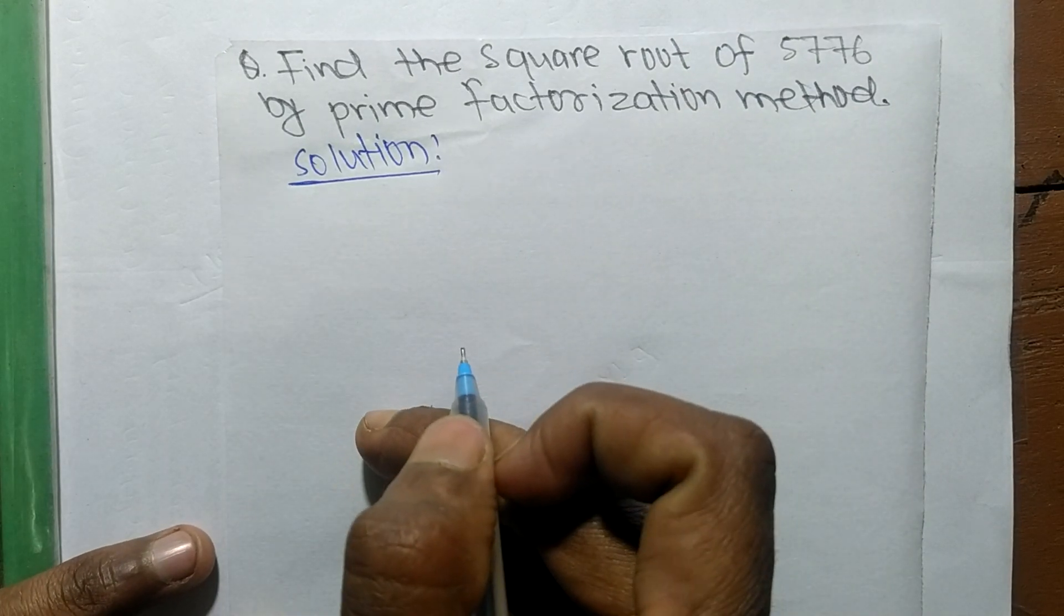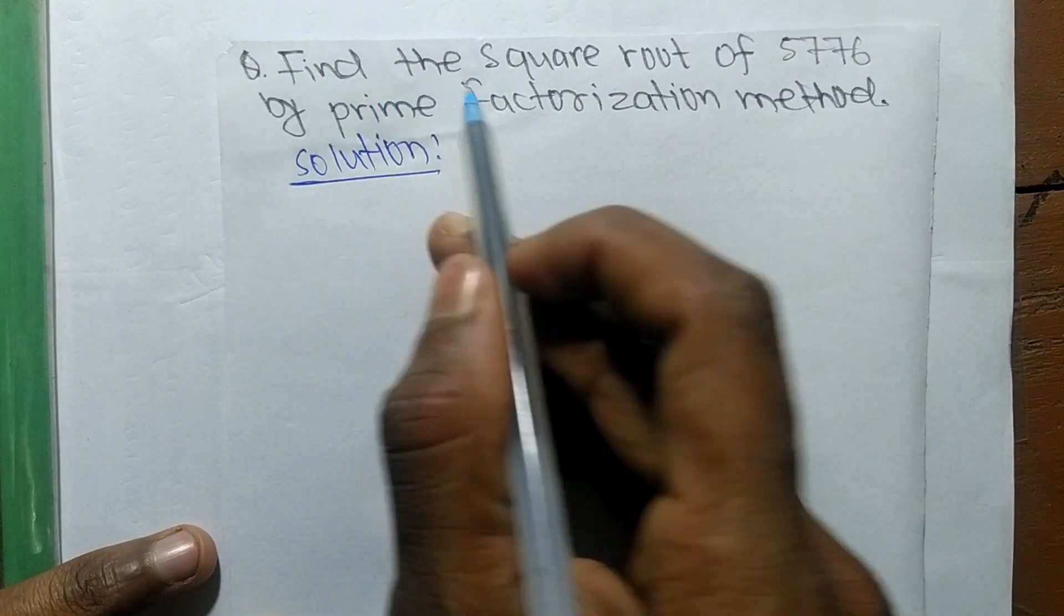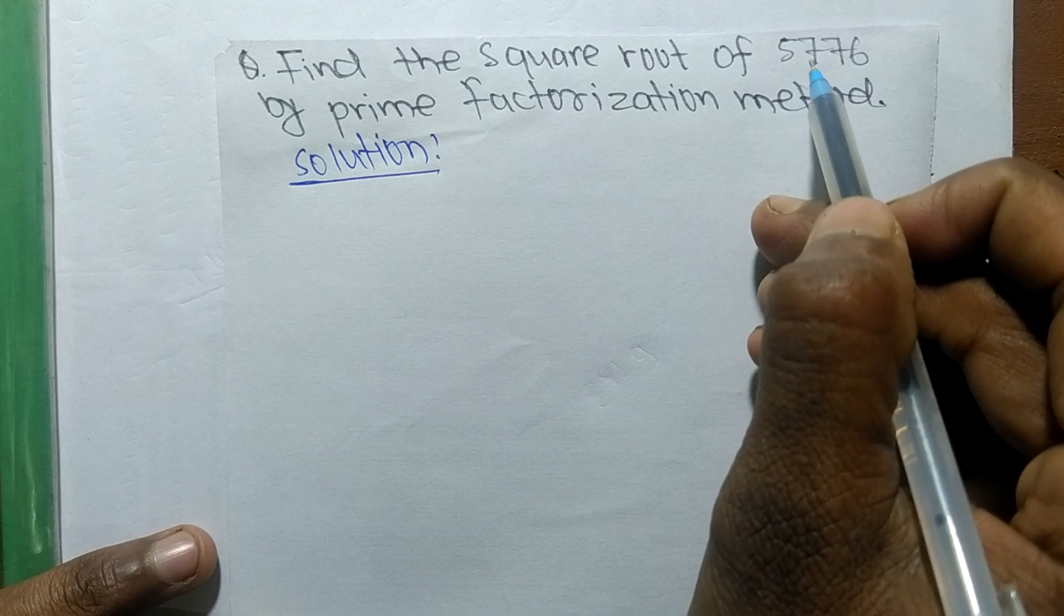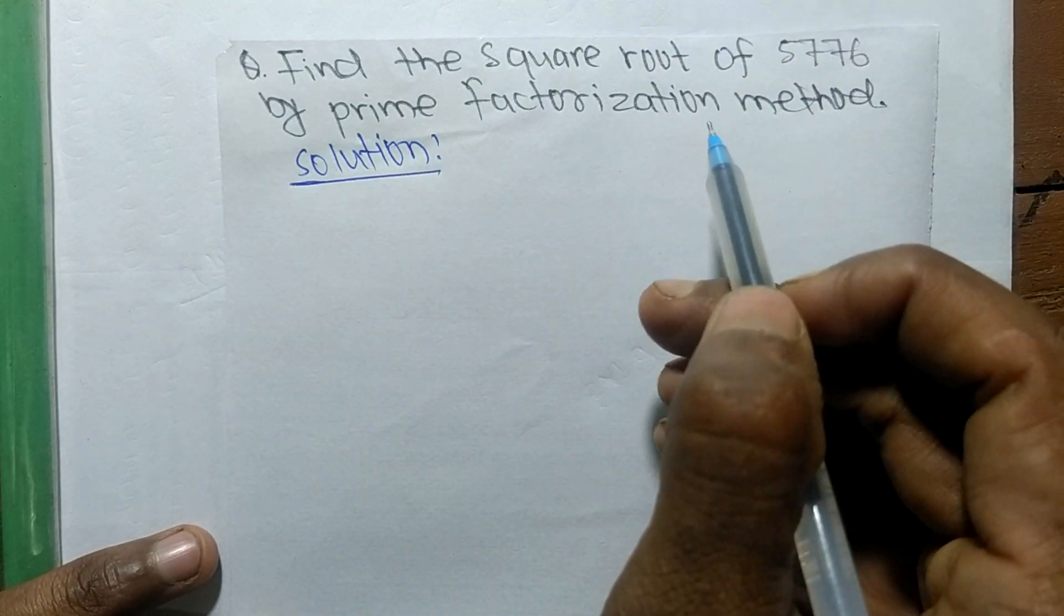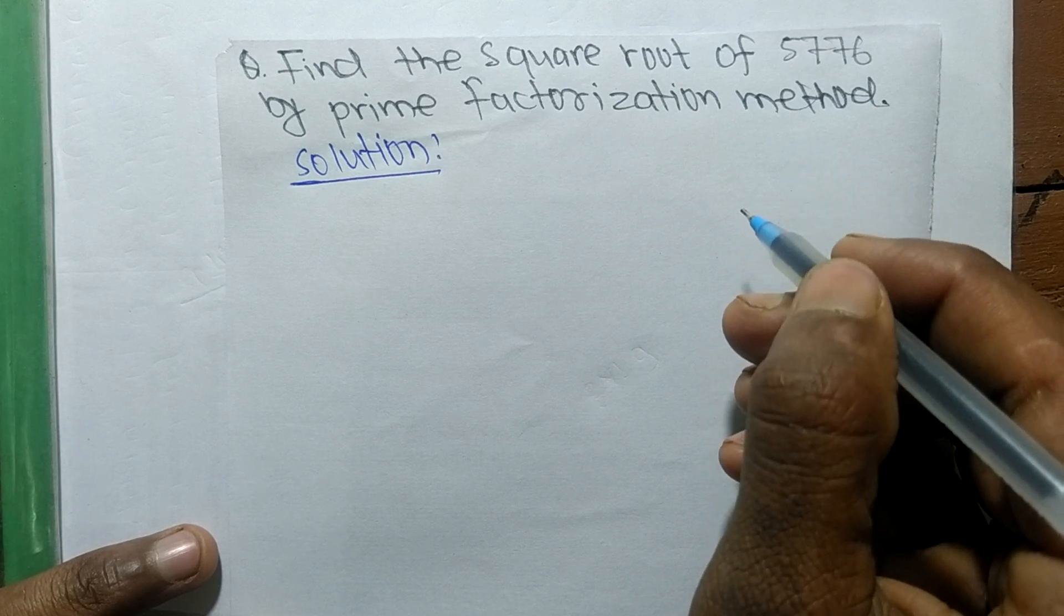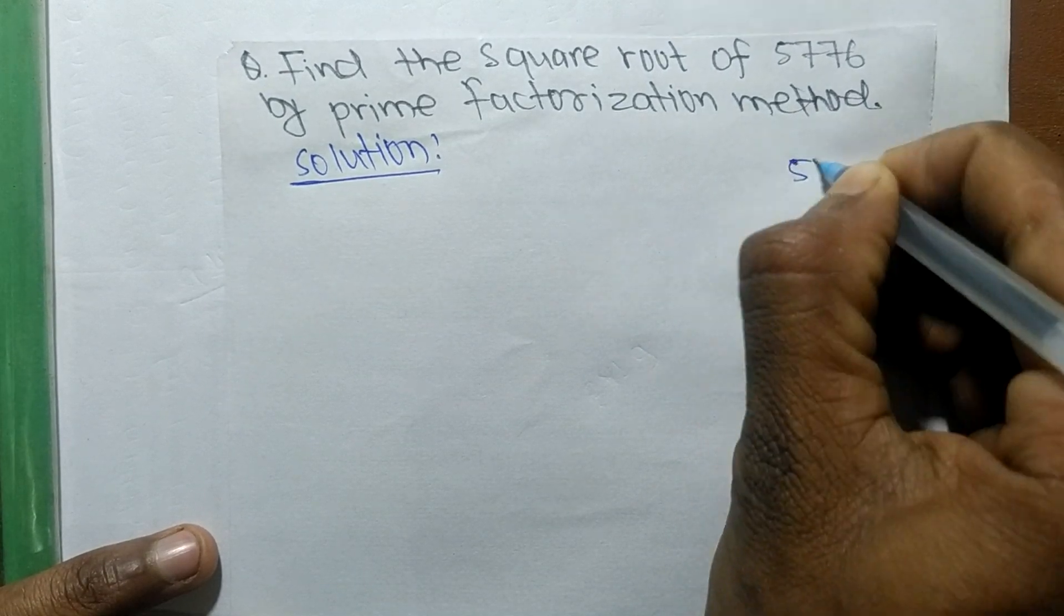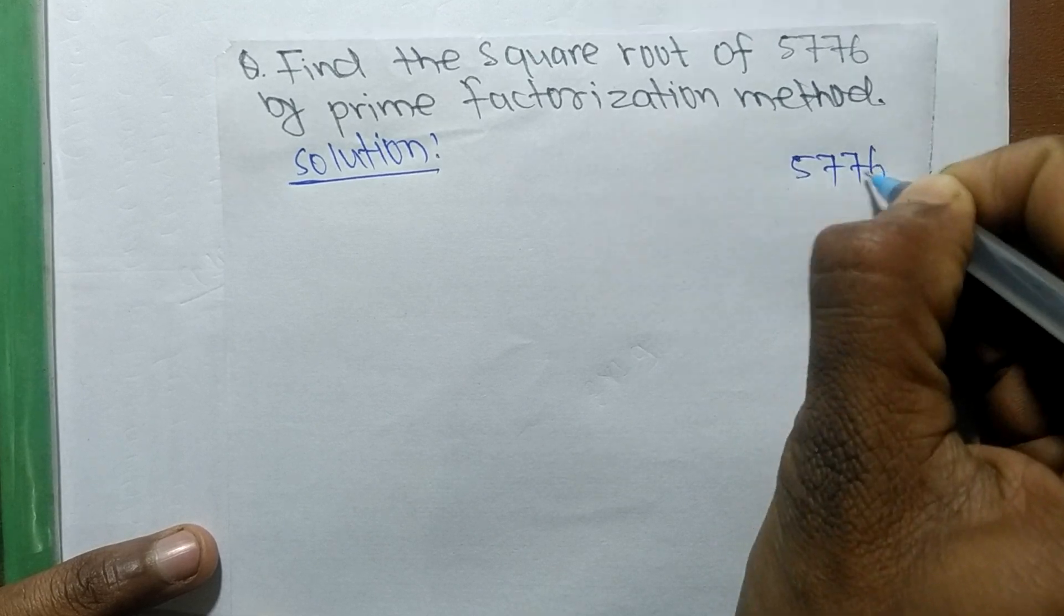Today in this video we shall learn to find the square root of 5776 by prime factorization method. In prime factorization method, first we have to find out the prime factors of 5776.